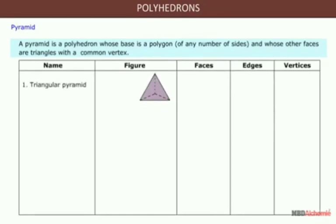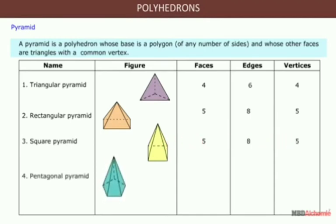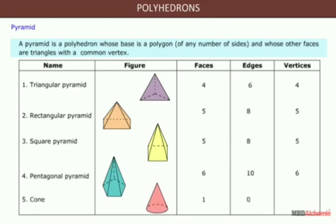Look at here. A triangular pyramid has 4 faces, 6 edges, and 4 vertices. A rectangular pyramid has 5 faces, 8 edges, and 5 vertices. A square pyramid has 5 faces, 8 edges, and 5 vertices. A pentagonal pyramid has 6 faces, 10 edges, and 6 vertices. A cone has 1 face, 0 edges, and 1 vertex.